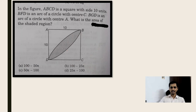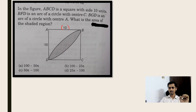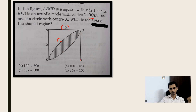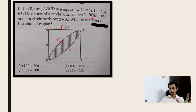Given: ABCD is a square with side 10 units — not 10 cm or 10 m, but 10 units. Arc BFD is one arc of a circle with center C, and arc BGD is another arc of a circle with center A. For understanding, if I take C as the center of the circle and plot a circle with center C, I get a circle passing through D, F, and B like this.